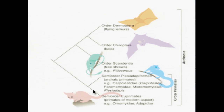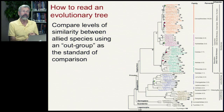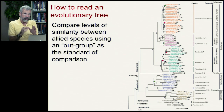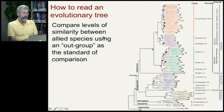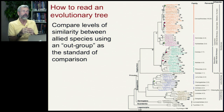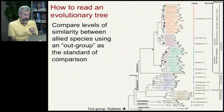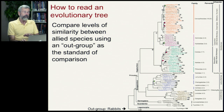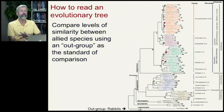Every time we use the word primate, we're including only those species that belong on this branch of an evolutionary tree. When reading an evolutionary tree, we want species that are very closely related to each other by recent common ancestry. To get a good sense of how close they are, the techniques require us to use an outgroup. In this example, our outgroup is going to be rabbits, way down at the bottom of the graph. The fact that the branching between rabbits and all those other evolutionary groupings is so far to the left means it happened a long, long time ago.